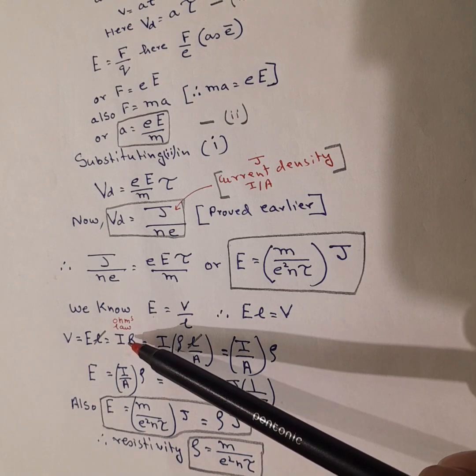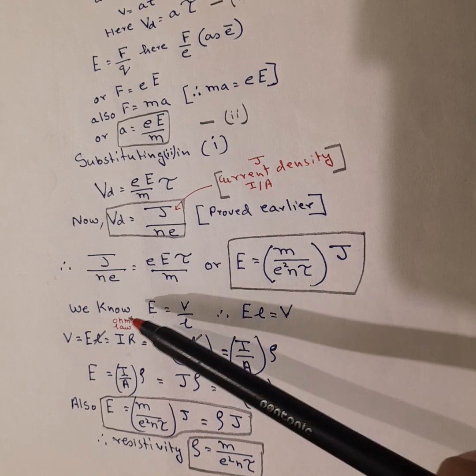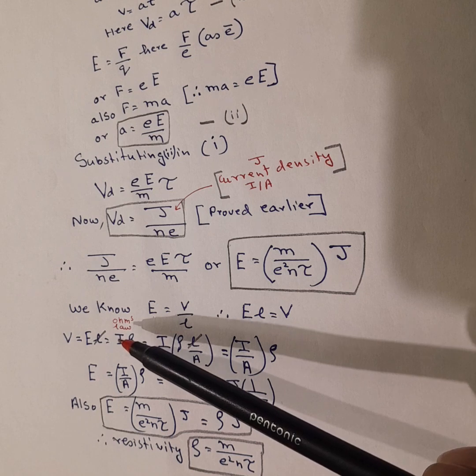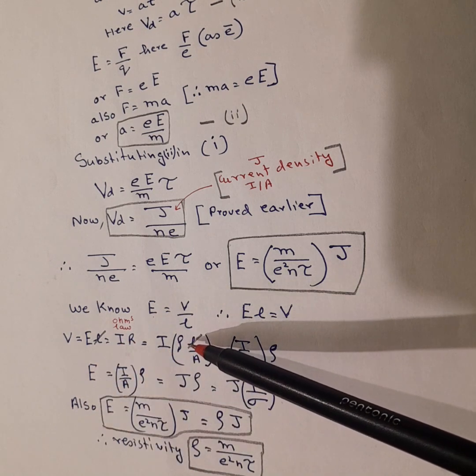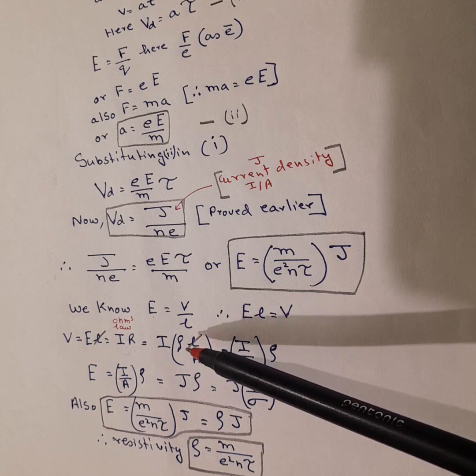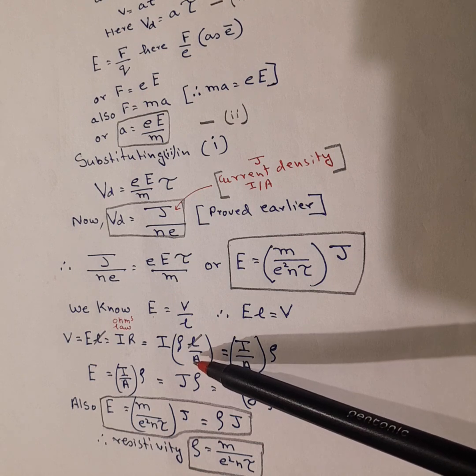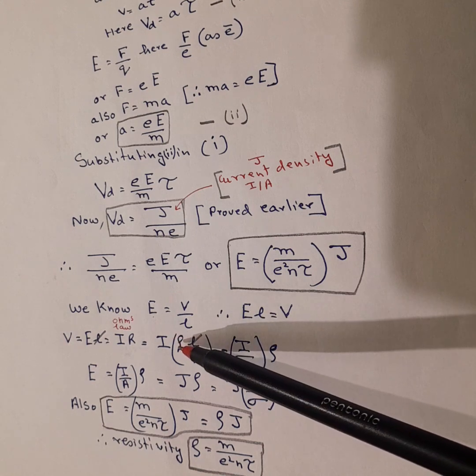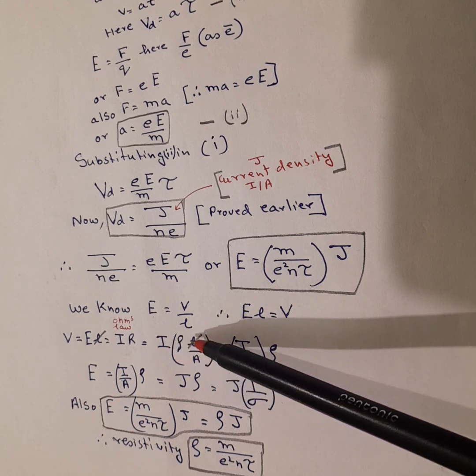At the same time, we also know a formula for R, which is rho into L upon A. Why was it? That was because resistance is directly proportional to length of wire and inversely proportional to area of cross section of wire through which current is flowing. And this is the proportionality constant resistivity. So we just substituted that.